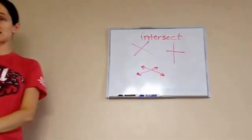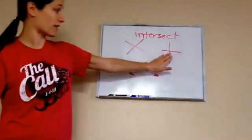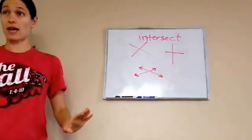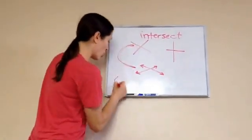All three of these pairs of lines are intersecting. These two are called oblique, oblique lines.